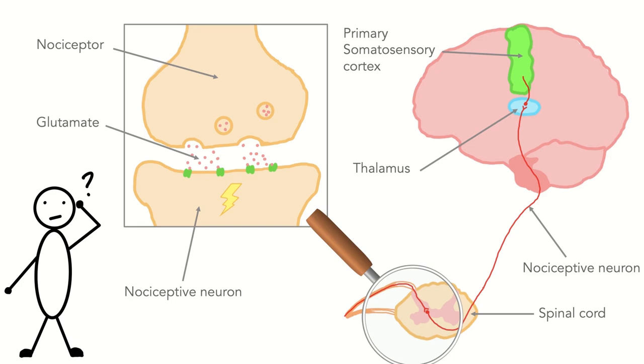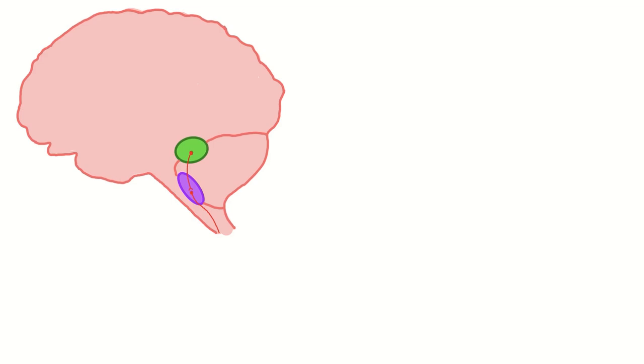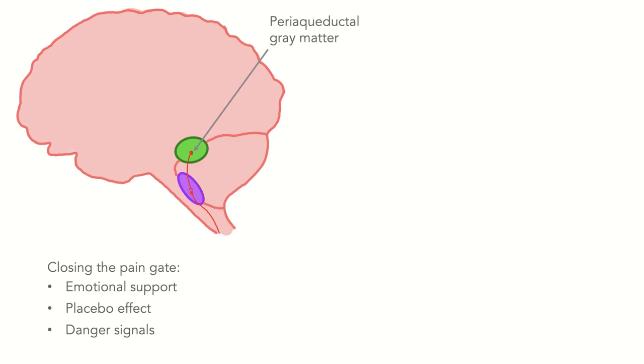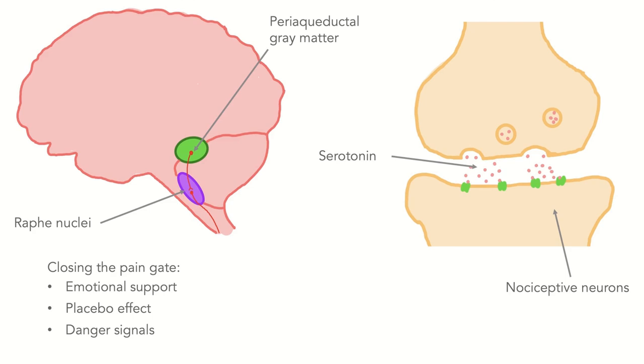The most important regulator of this pain modulation, the gate of pain perception, is thereby thought to be this brain region, the periaqueductal grey matter. Stimulating this region, for example by emotional support, the placebo effect or danger signals, causes the stimulation of other brain regions, called the raphe nuclei, which can then release the neurotransmitter serotonin onto nociceptive neurons. With the difference that this time, the neurons are not stimulated, such as with glutamate, but that the signal transmission is actually suppressed, closing the pain gate, hence reducing pain perception.